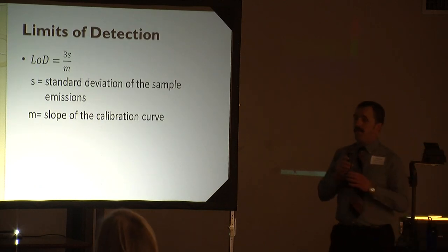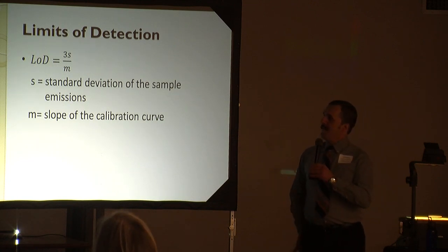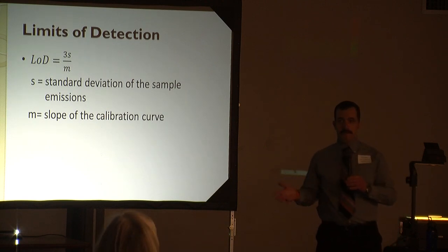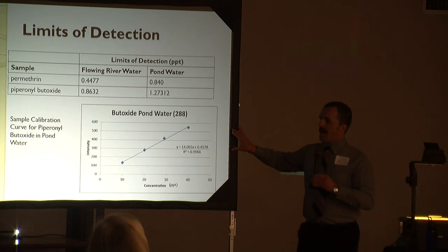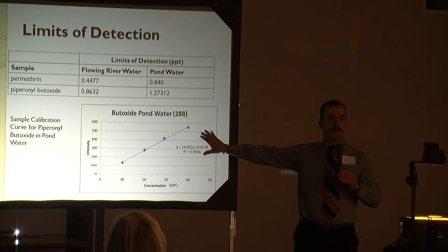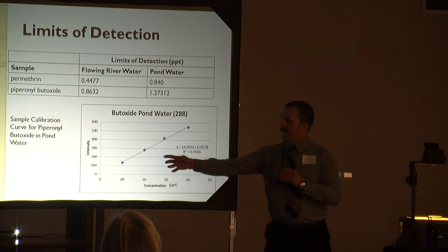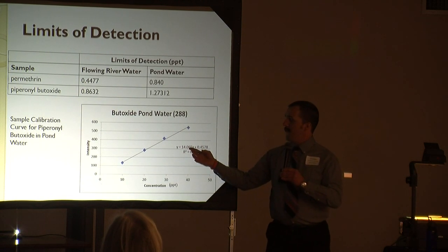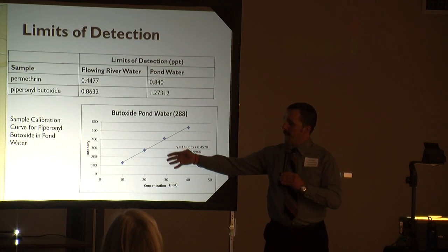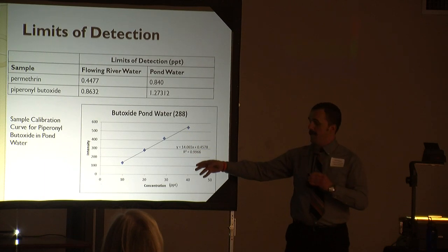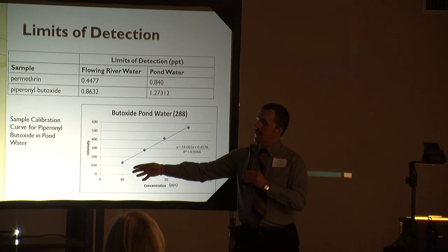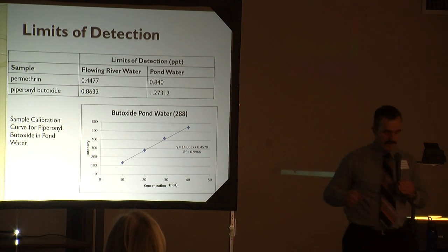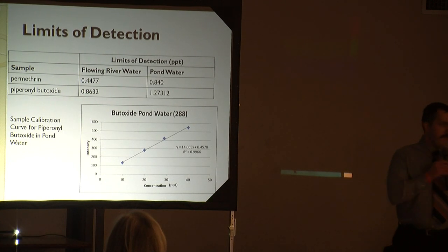We use this information to find what's called LOD or limits of detection, which is determined by taking three times the standard deviation of the sample emissions divided by the slope of the calibration curve. The slope you probably remember from algebra - y equals mx plus b - we take the m. Here is a sample calibration curve of the piperonyl butoxide we used in pond water. This is at the Cattails golf course, that pond there. You see here the straight line - the slope is 14.065. You notice here that with this calibration curve, intensity is a function of concentration. At higher concentrations, the intensity at which emission occurs gets stronger and stronger. This is the basis of what we call standard additions, which Jeremy will explain more about.